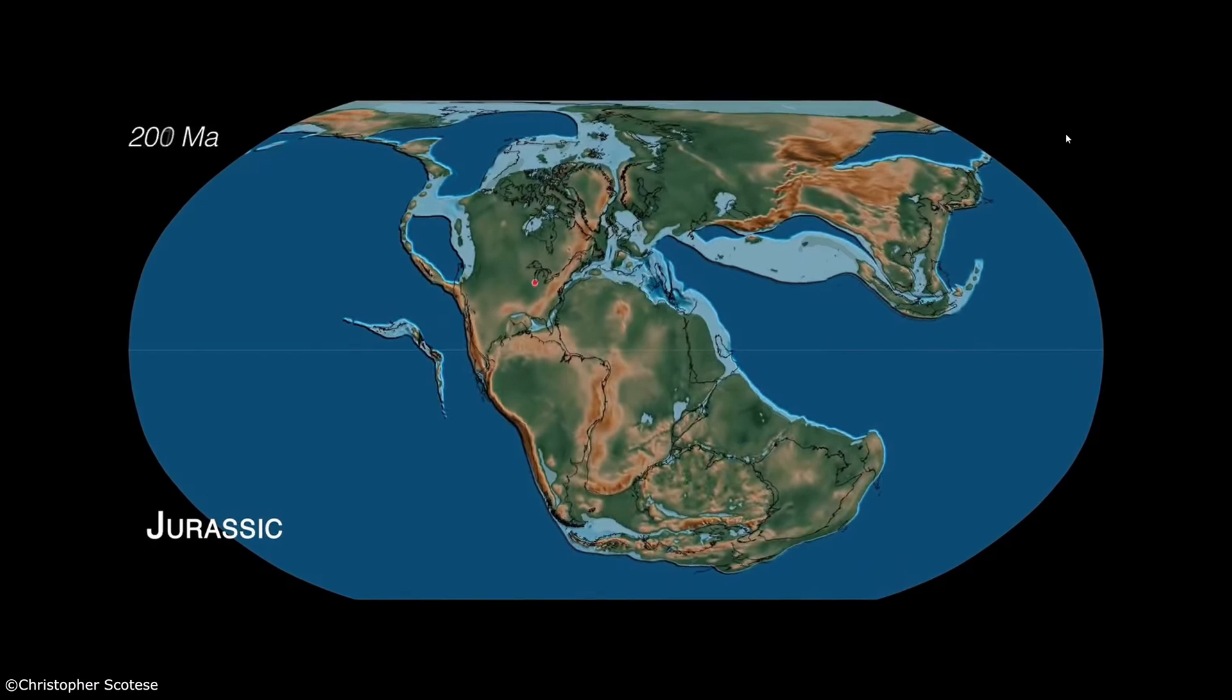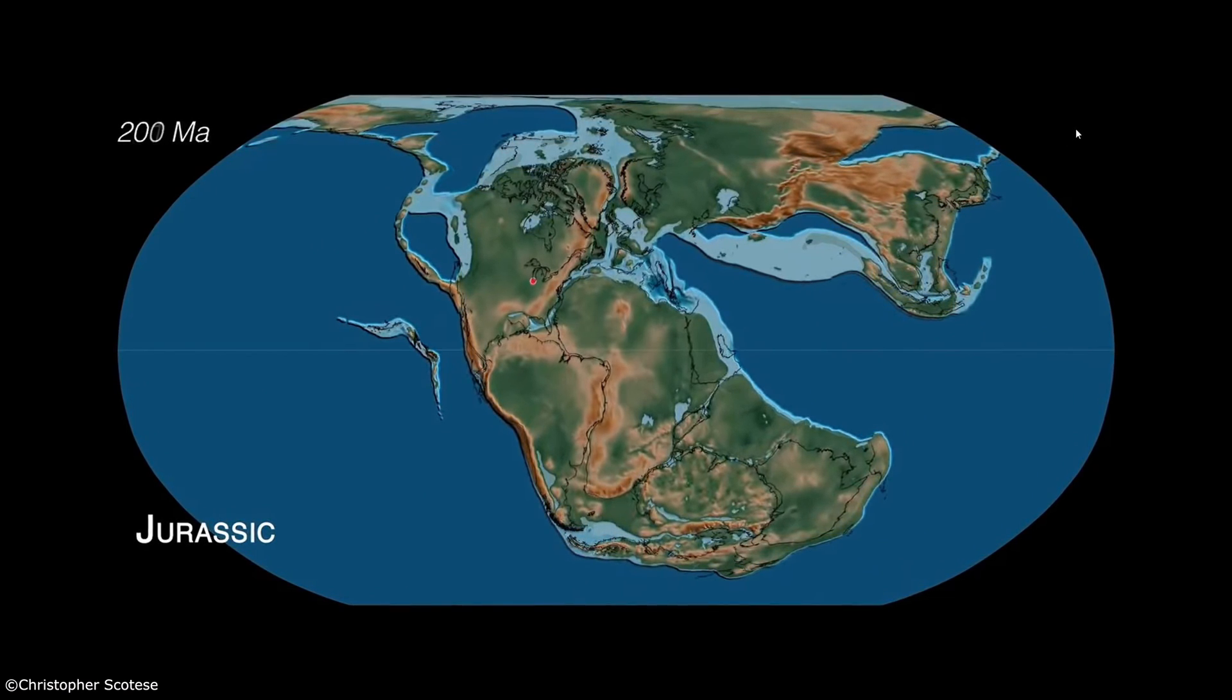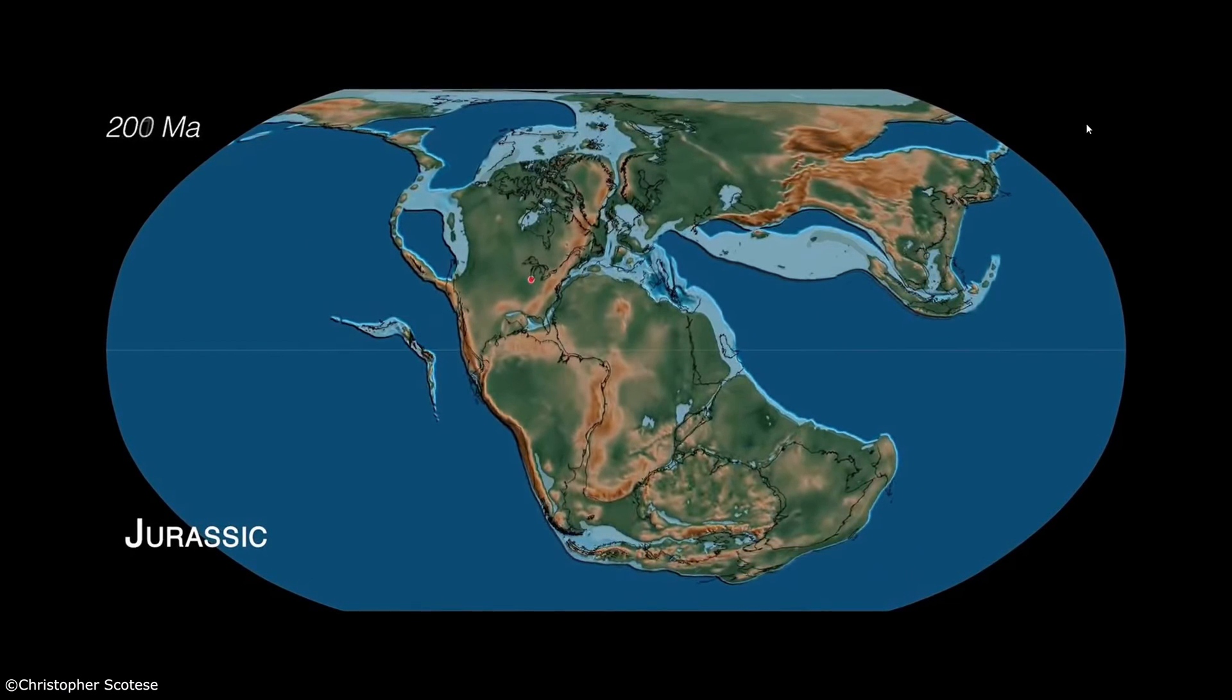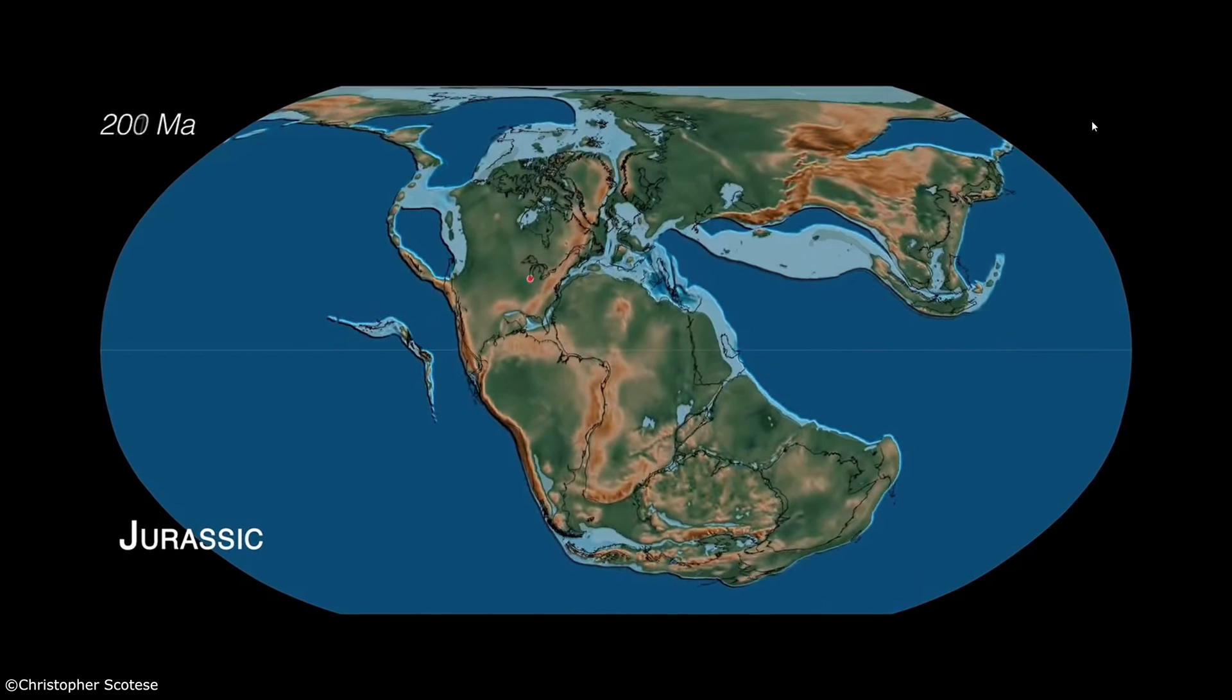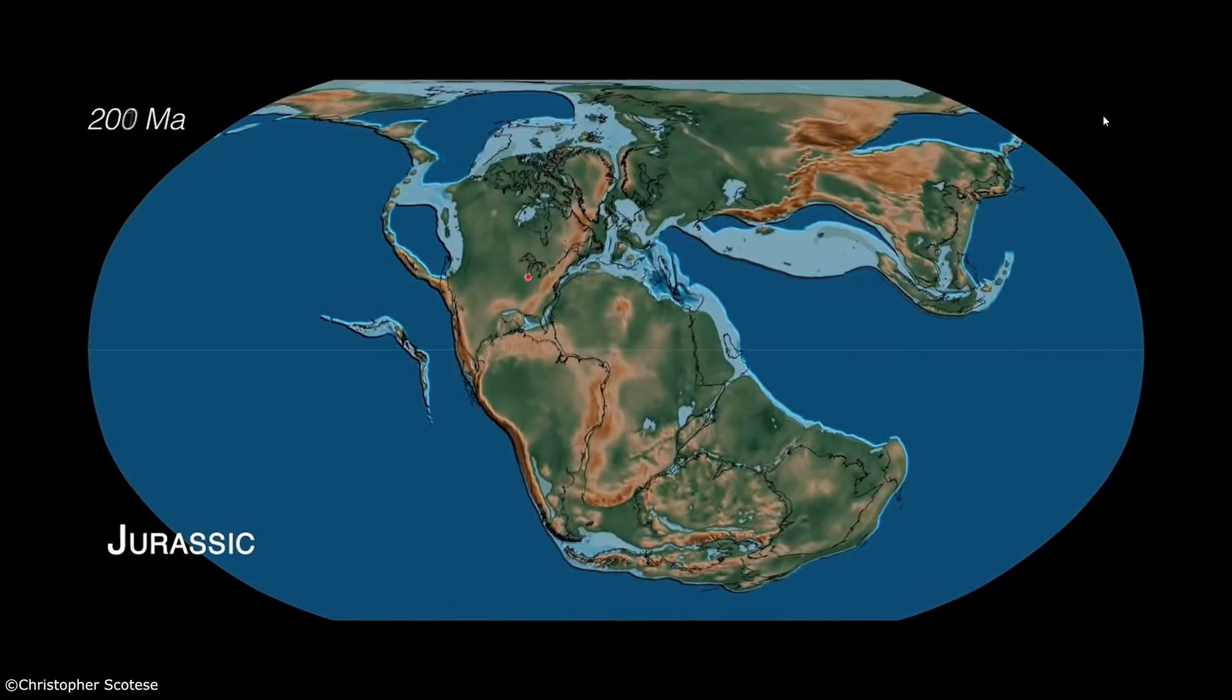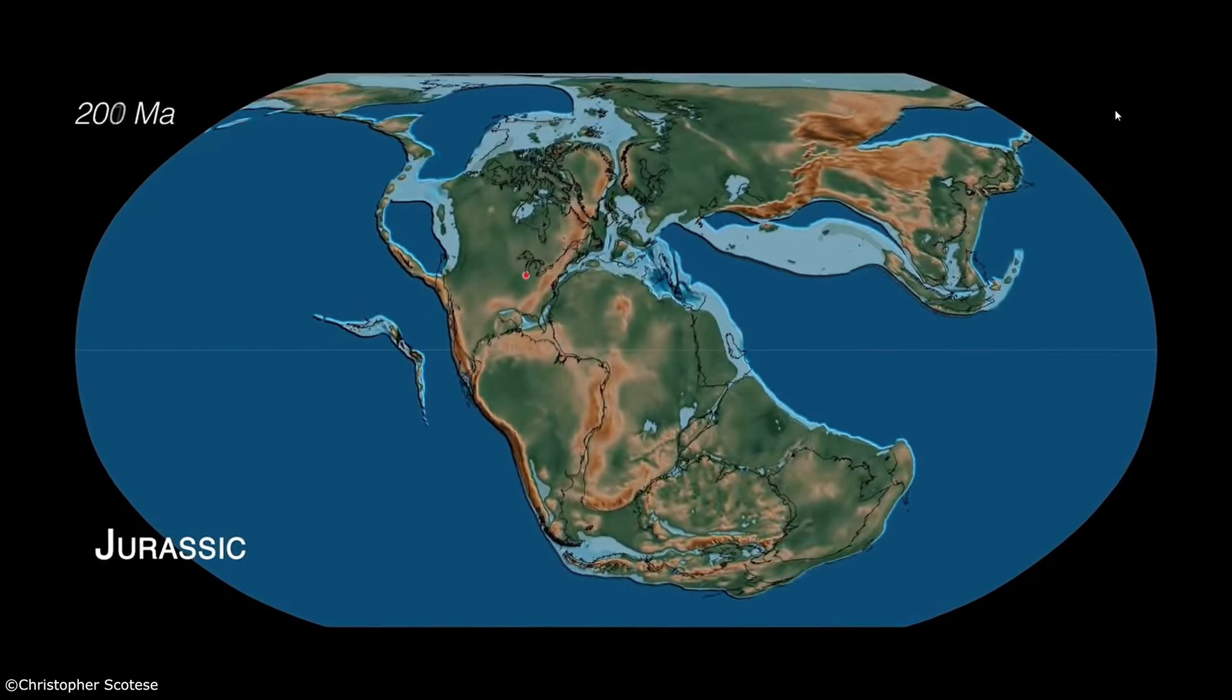This fossil evidence clearly showed that about 250 million years ago, South America, Africa, Madagascar, India, Australia, and Antarctica must have been connected in some way, because none of these common species could cross oceans. And even if they could have, the fossils should have been found in other places around the world then, as well.